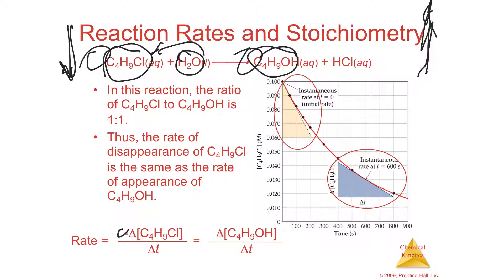The one being used up is negative and the one being produced is positive, in a one-to-one relationship. But if you have something like two pieces of bread for every sandwich — a two-to-one relationship — that has to be figured into the rate, which we'll look at next.